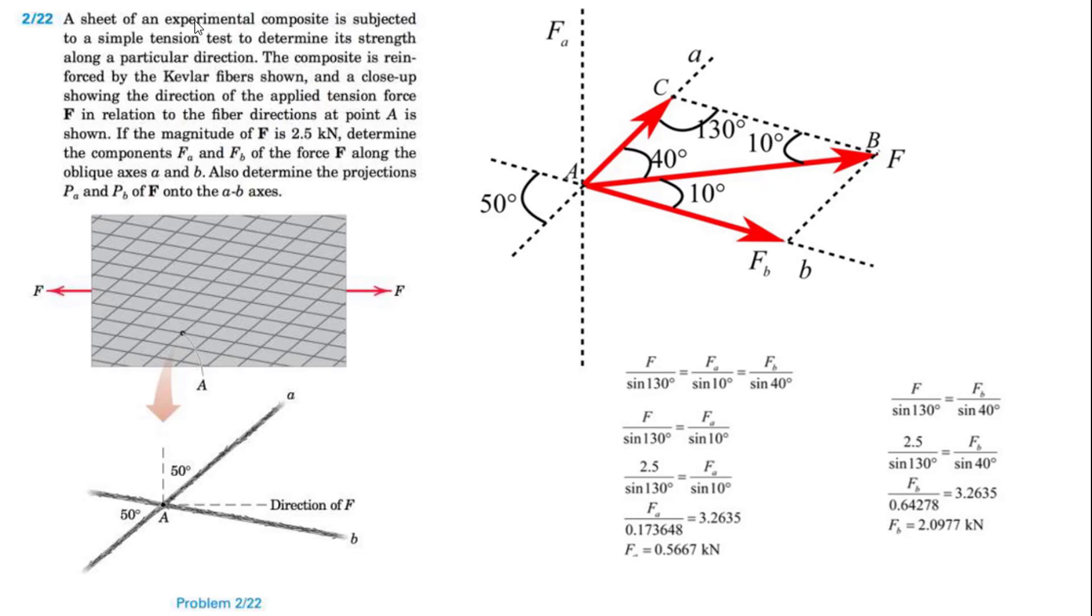So problem 2/22: A sheet of an experimental composite is subjected to a simple tension test to determine its strength along a particular direction.